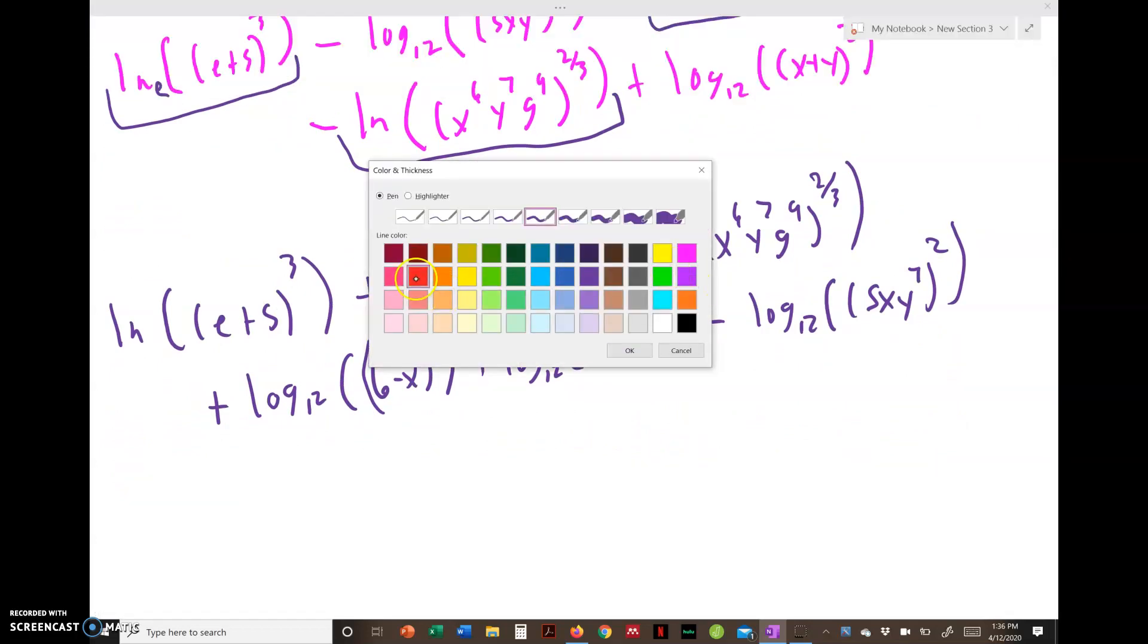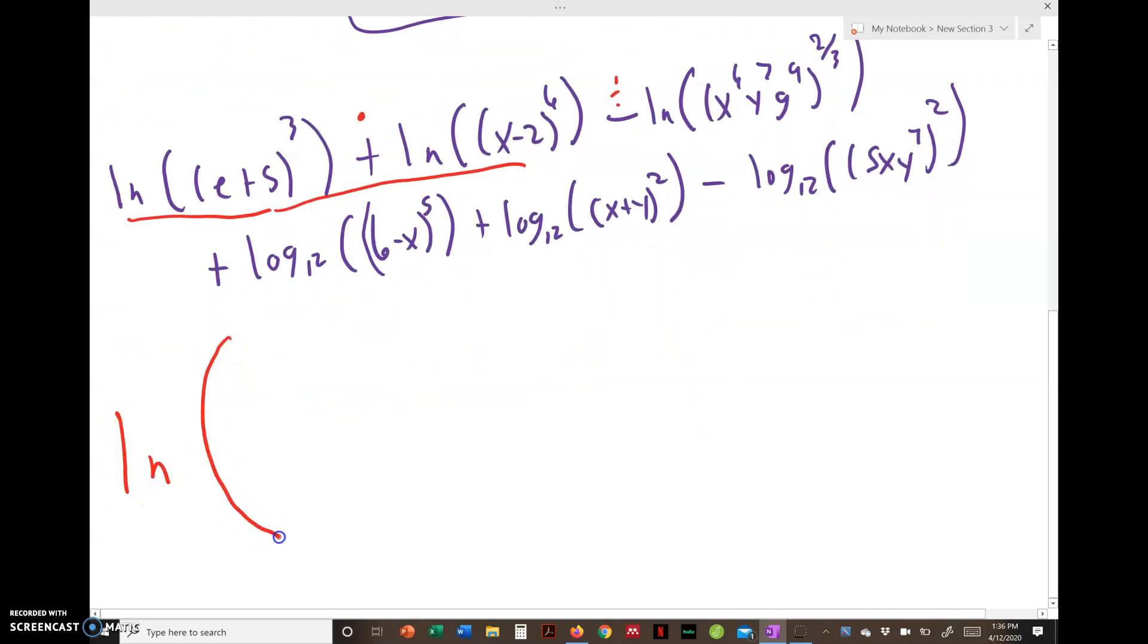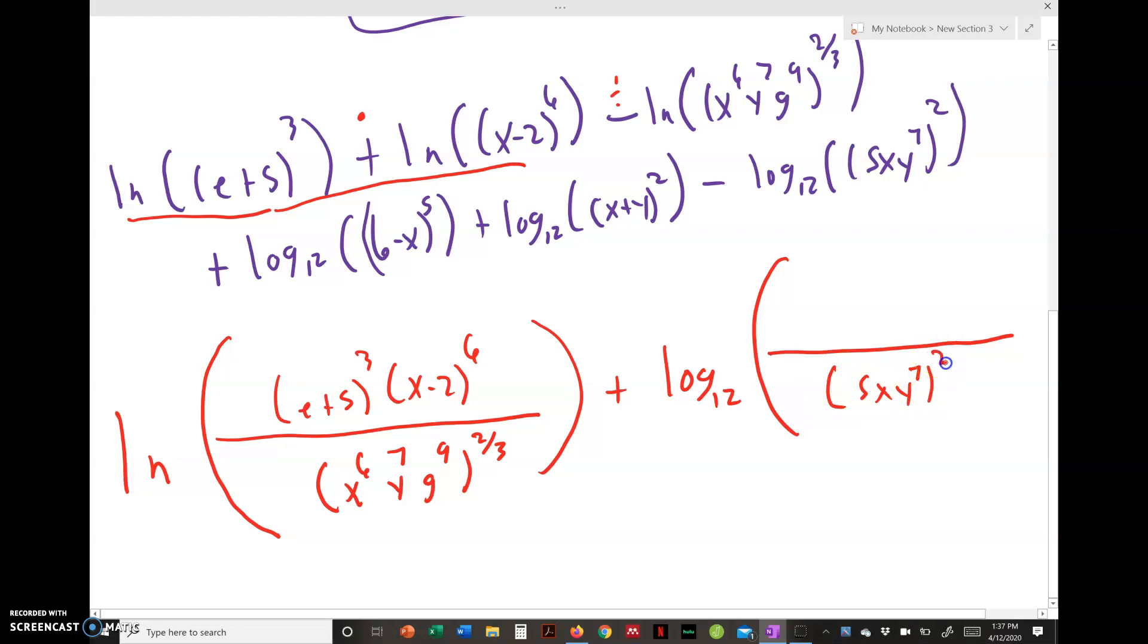Now this is where properties 8, 9, 10, and 11 come in. Same base with adding is multiply, so this is going to become multiplication, and our subtraction will be division. So we're going to have ln of big parentheses, our division. Remember the subtraction goes in the bottom, so we have [(e+5)^3 × (x-2)^6] / [(x^6 y^7 g^9)^(2/3)]. And then the same idea: plus log base 12 of [(6-x)^5 × (x+y)^2] / [(5xy^7)^2].